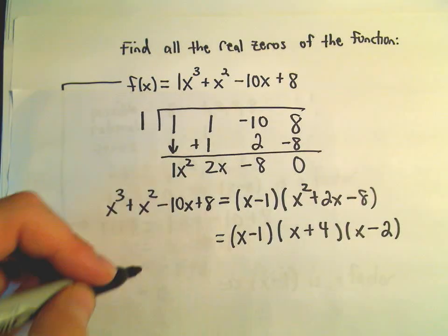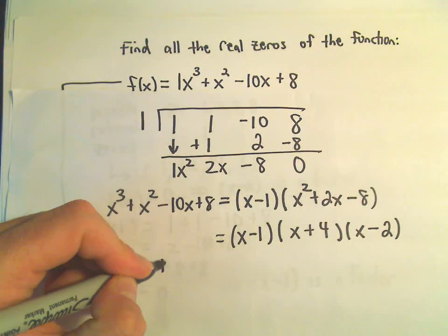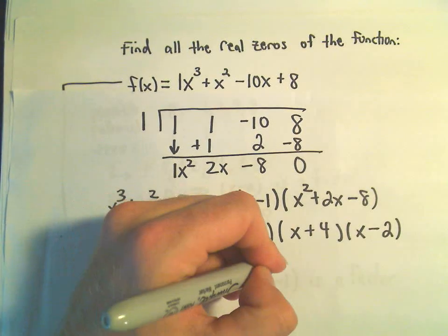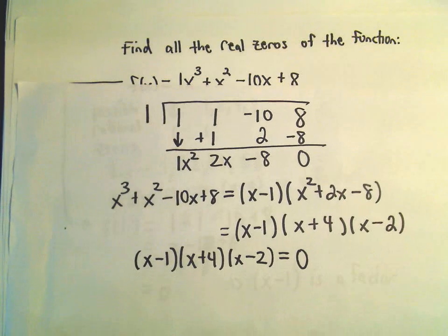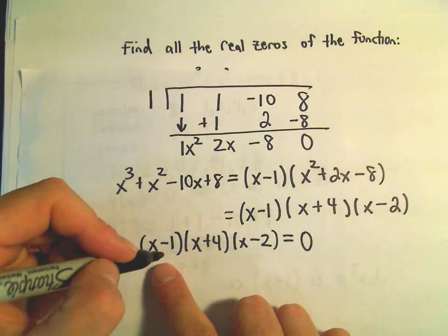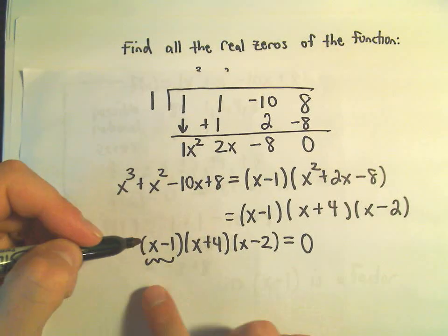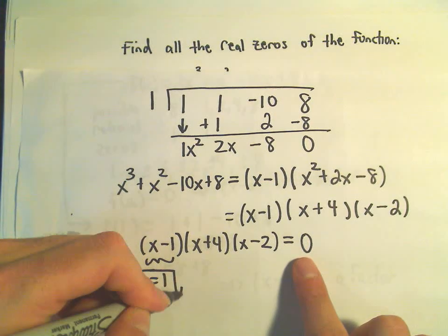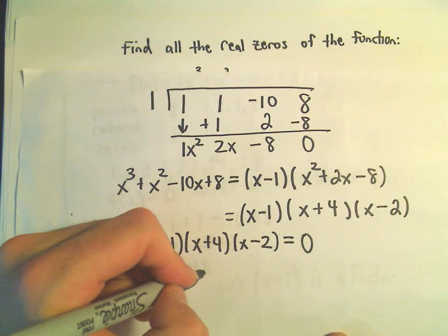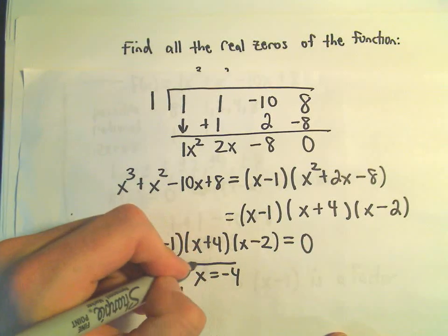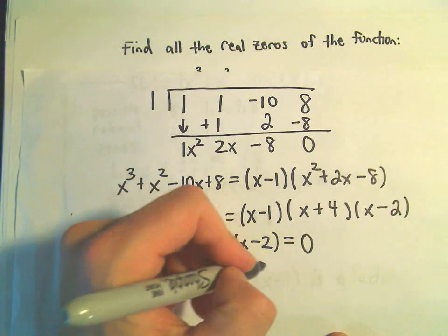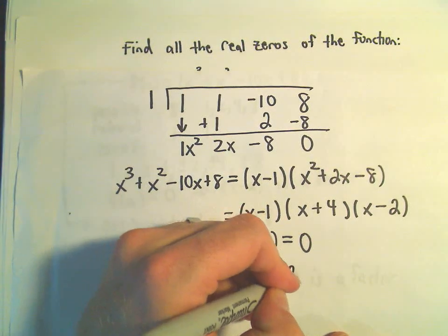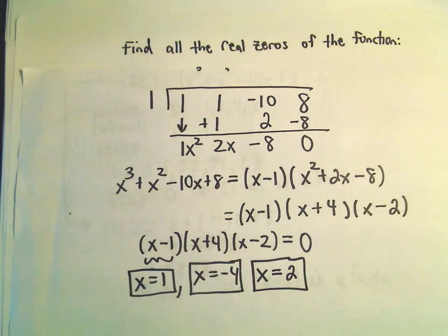So now we have it factored, and if we set this polynomial equal to 0, again, that's what we're trying to do after all, is find the zeros. Well, then we just set each factor equal to 0. If we set x minus 1 equal to 0, we would add 1 and get x equals 1 as one of our zeros. If x plus 4 equals 0, we would get x equals negative 4 as a zero. If we set x minus 2 equal to 0, we would add 2 and get x equals 2 as our other zero.